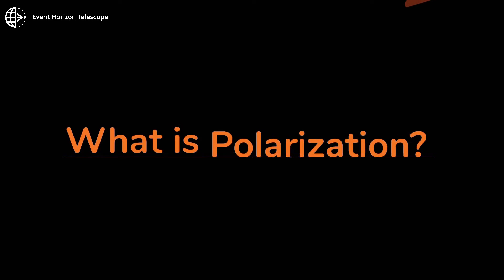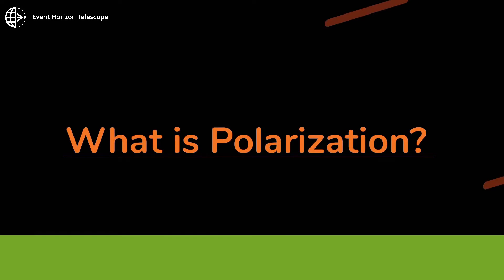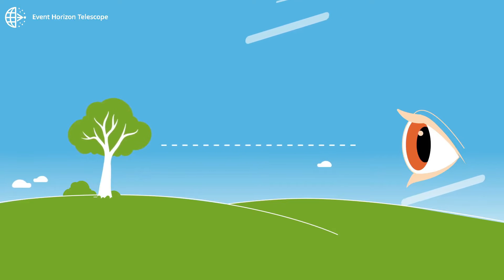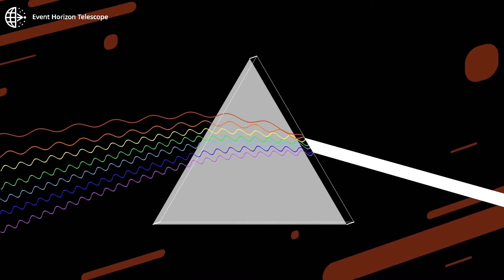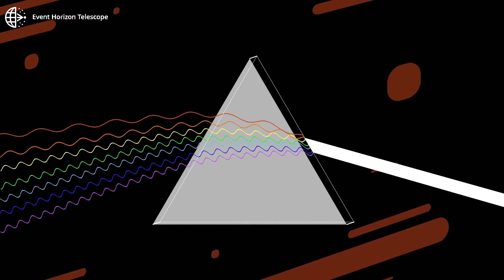What is polarization? Light bouncing off objects allows us to see them. Light is an oscillating electromagnetic wave. We see different frequencies of that oscillation as different colors.